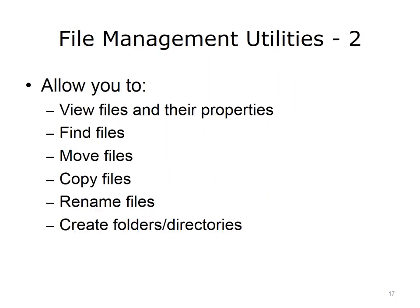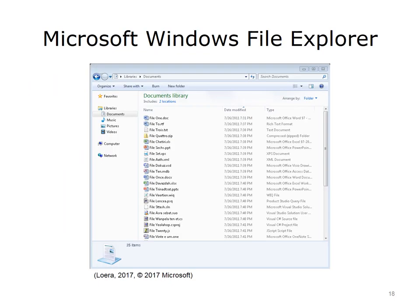File management utilities allow you to view files and their properties, find files, move files from one folder or directory to another, copy and paste files or folders, rename files or folders, and create folders and directories. This is a screenshot of File Explorer in Microsoft Windows 7. Depending on the view selected from the Views menu, the user may or may not see the detailed properties about the files and folders. This view is the detailed view. It shows the file's name, including the file's extension, the date the file was last modified, the file's size, and the file's type. There are other options in the menus at the top of the window and the links on the left, including search, quick links to other locations on the computer, and links to file and folder tasks.